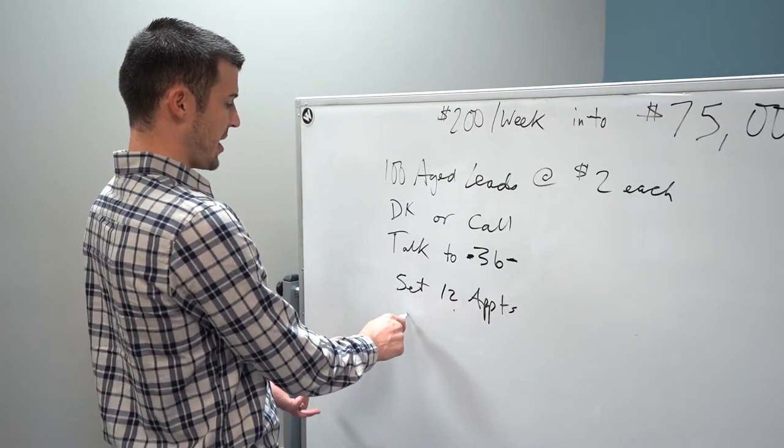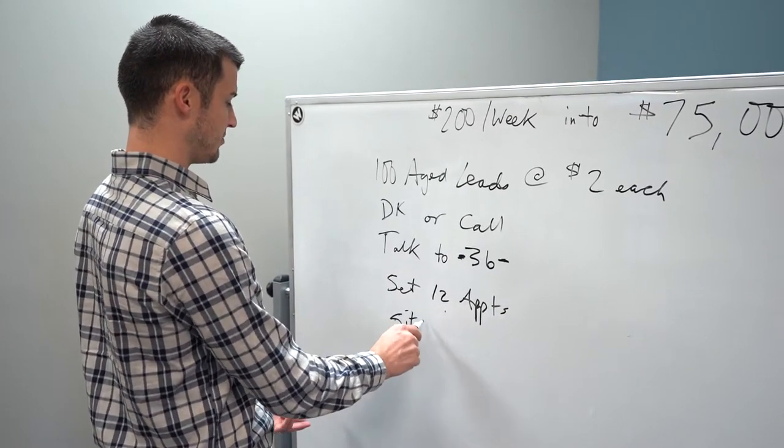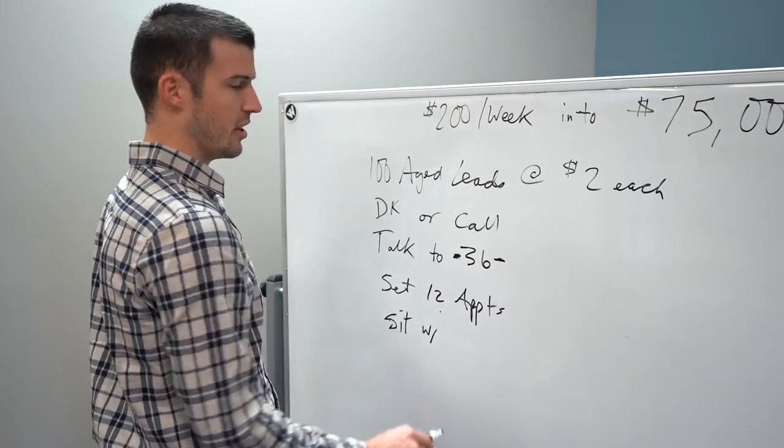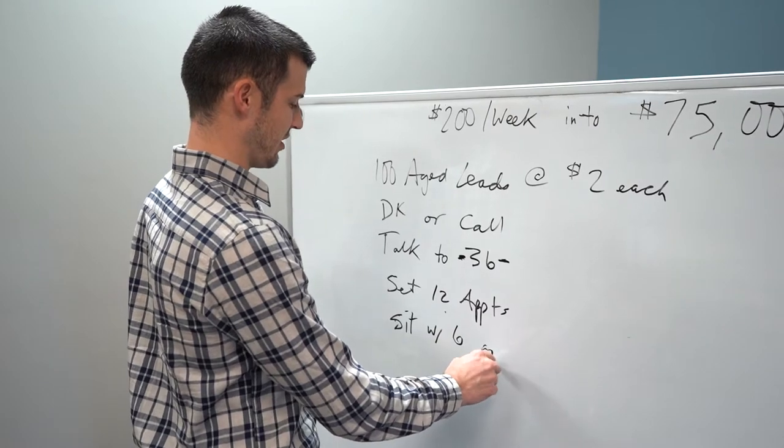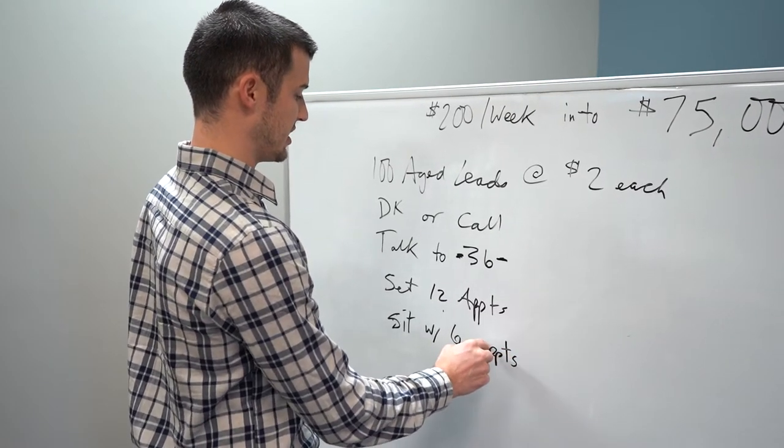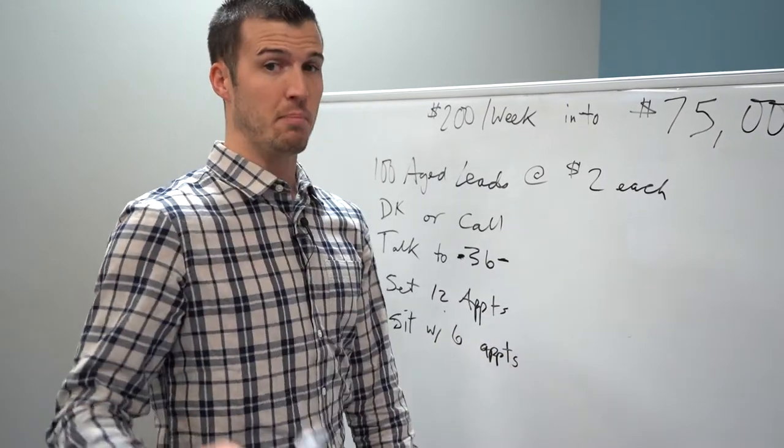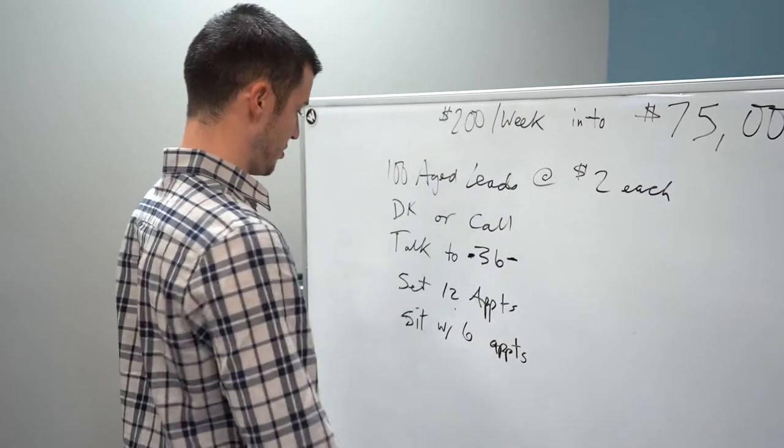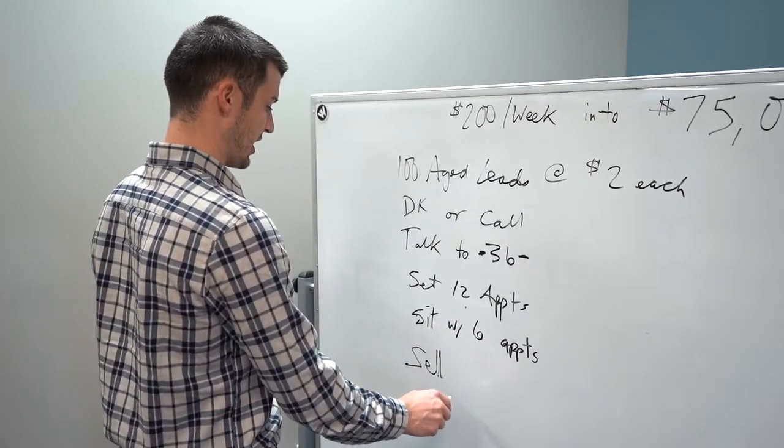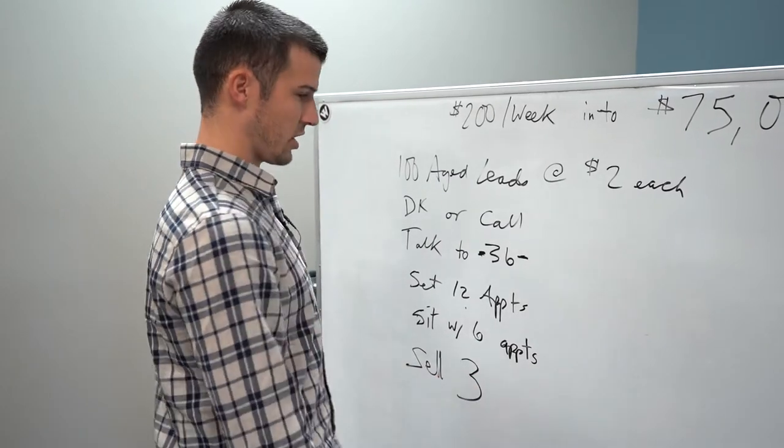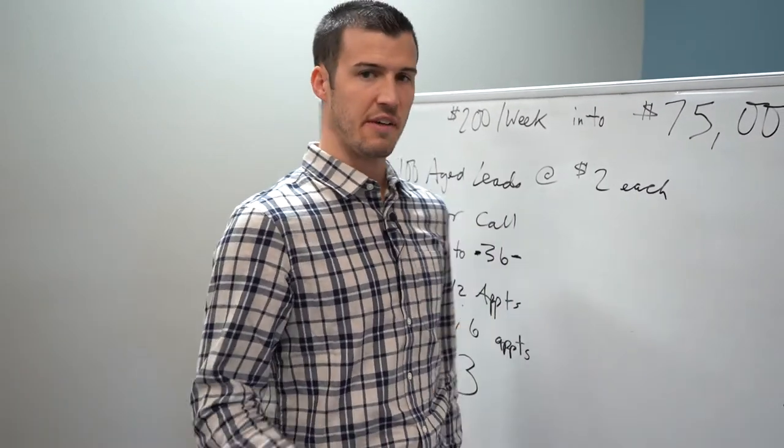Let's just say that you have an awful week and you only sit with six, which if you don't have a 50% sit rate, if you don't have above that, something's wrong, we can fix that too. And then let's just say you actually sell three. Well, that brings us to 75k.